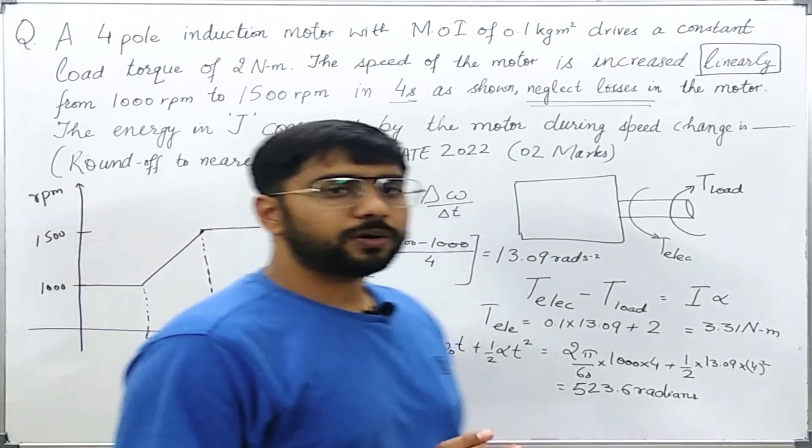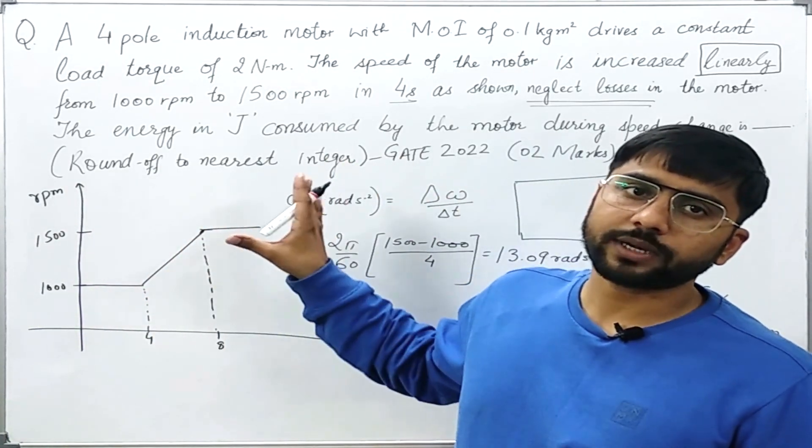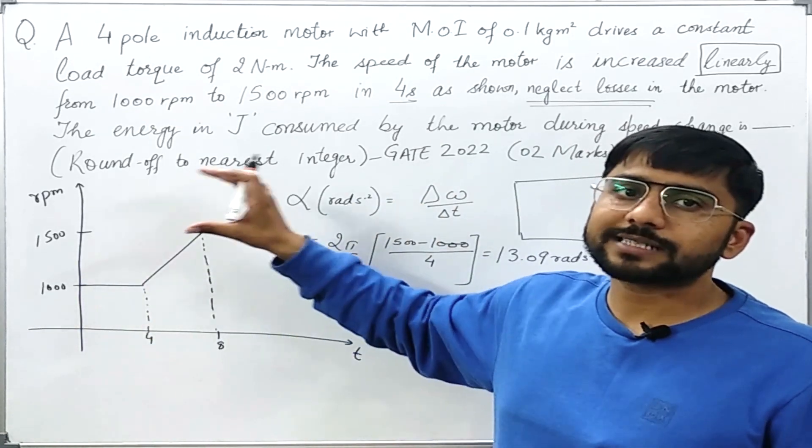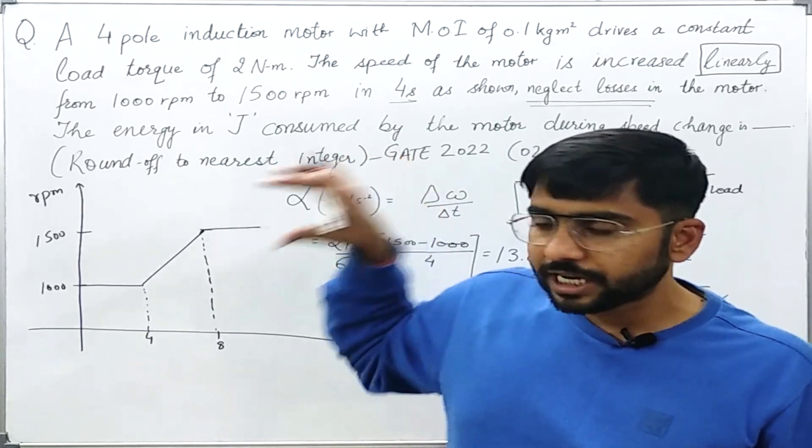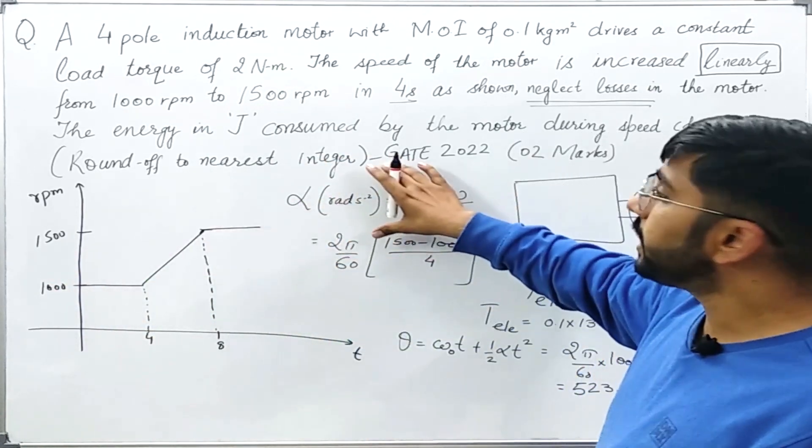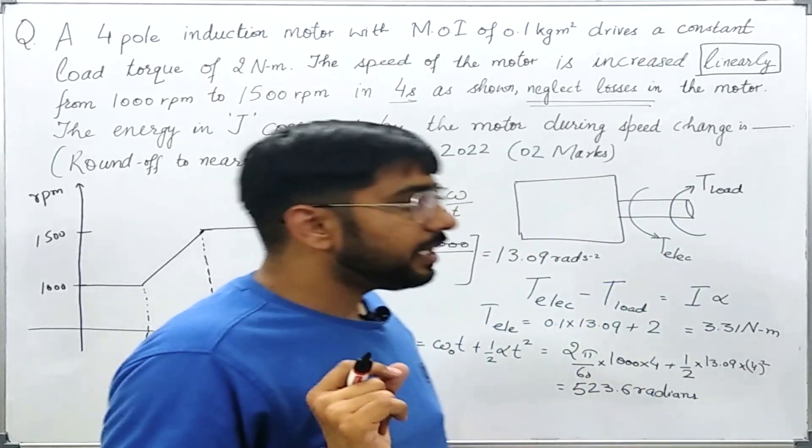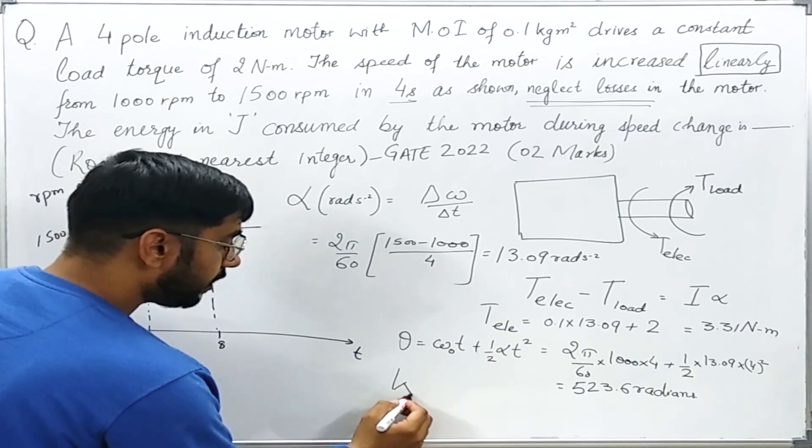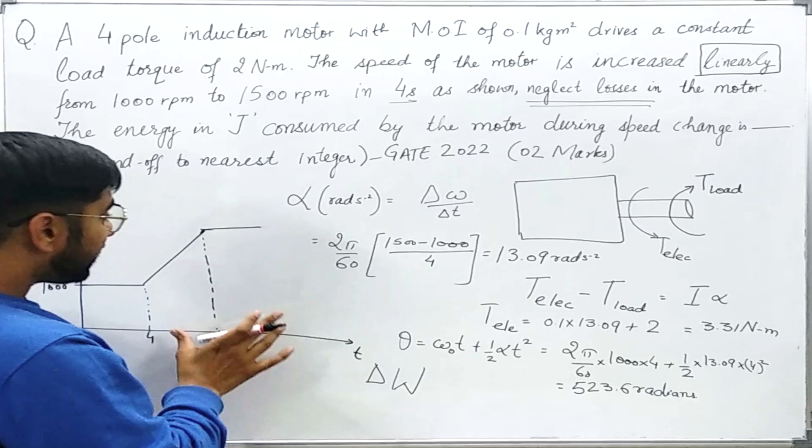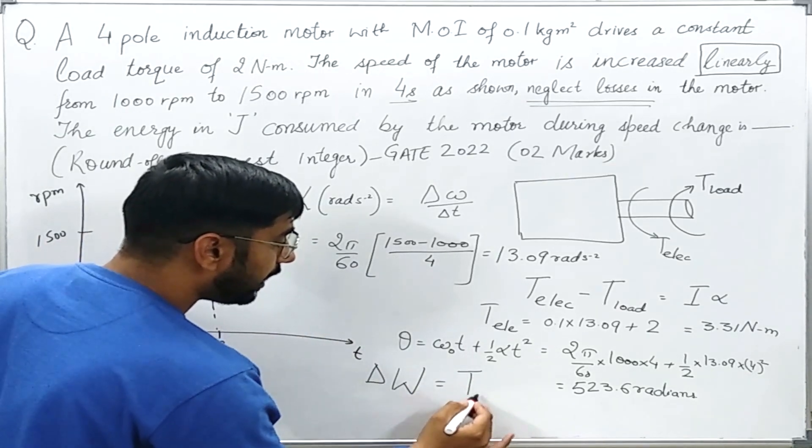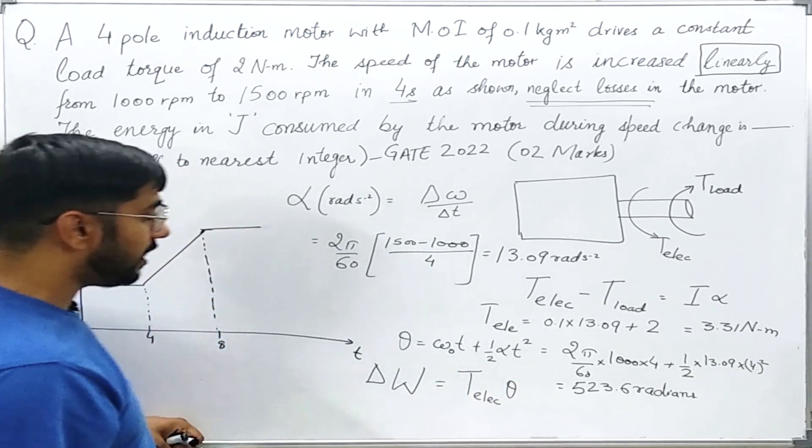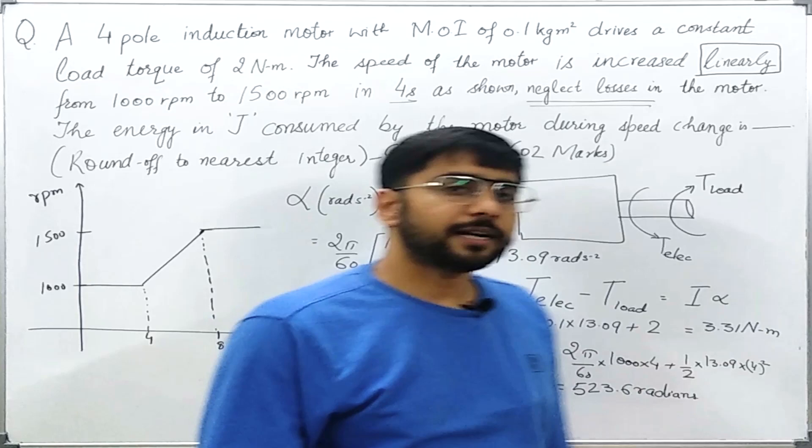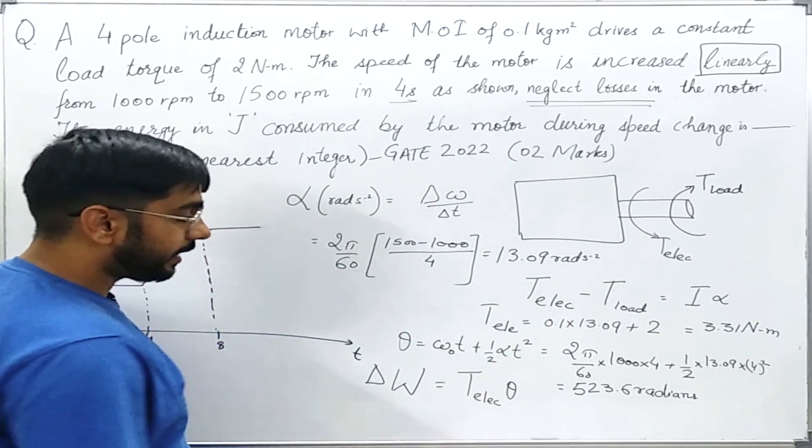Now we know that the energy consumed by the motor or the full set motor and the load set will be equal to the energy which is being delivered by the electrical supply. So if I find out the total energy given by the electrical supply then I will be able to write the answer here. Now we know that the electrical energy which is being delivered to it will be simply equal to the work done by the electrical torque during this interval. Now what it will be? It will be simply torque_electrical into theta which is travelled during this duration. Now torque_electrical and theta are on the same direction everywhere on the periphery. So the dot product is simply T_electrical·theta.